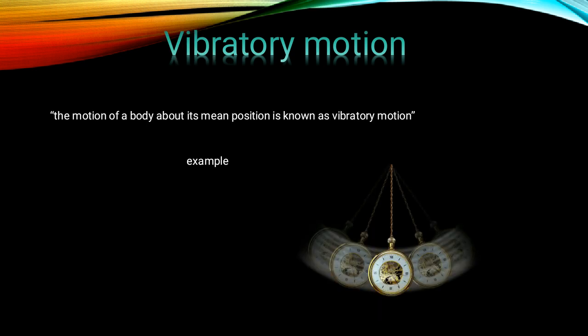Vibratory motion: the motion of a body about its mean position is known as vibratory motion. The motion of a pendulum of a clock about its mean position is an example of vibratory motion. Also, children playing on a see-saw is another example of vibratory motion. Thank you.